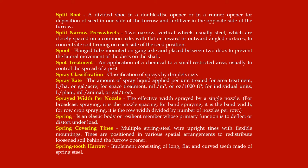Split boot: a divided shoe in a double disc opener or runner opener for deposition of seed in one side of the furrow and fertilizer in the opposite side. Split narrow press wheels: two narrow vertical wheels, usually steel, closely spaced on a common axle with flat or inward/outward angled surfaces to concentrate soil firming on each side of the seed position.